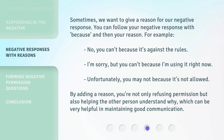Sometimes, we want to give a reason for our negative response. You can follow your negative response with 'because' and then your reason. For example: No, you can't because it's against the rules. I'm sorry, but you can't because I'm using it right now. Unfortunately, you may not because it's not allowed. By adding a reason, you're not only refusing permission, but also helping the other person understand why, which can be very helpful in maintaining good communication.